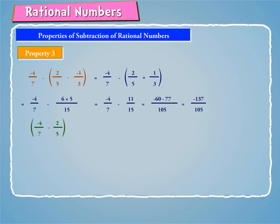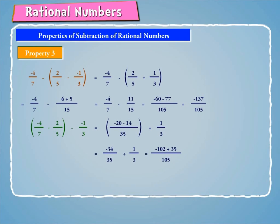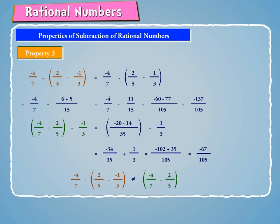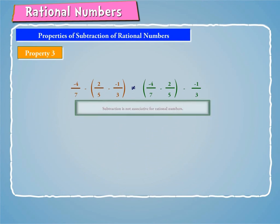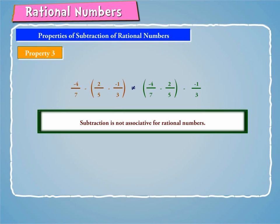Now [(−4/7) minus (2/5)] minus (−1/3) equals [(−20 minus 14) by 35] plus (1/3), which equals (−34/35) plus (1/3), which equals (−102 plus 35) by 105. Since the two results differ, subtraction is not associative for rational numbers. Hence, if a, b, and c are any three rational numbers, then (a minus b) minus c is not equal to a minus (b minus c).